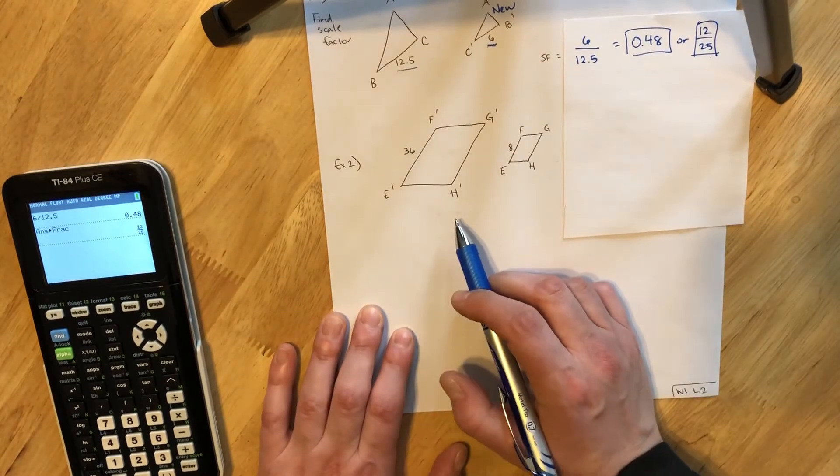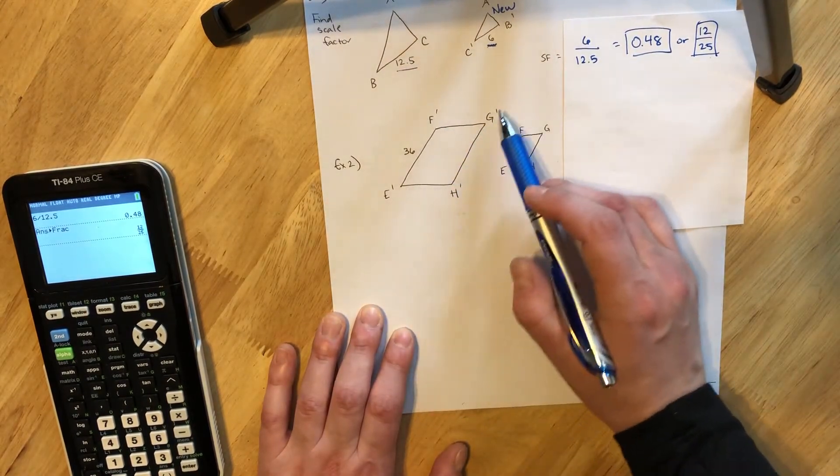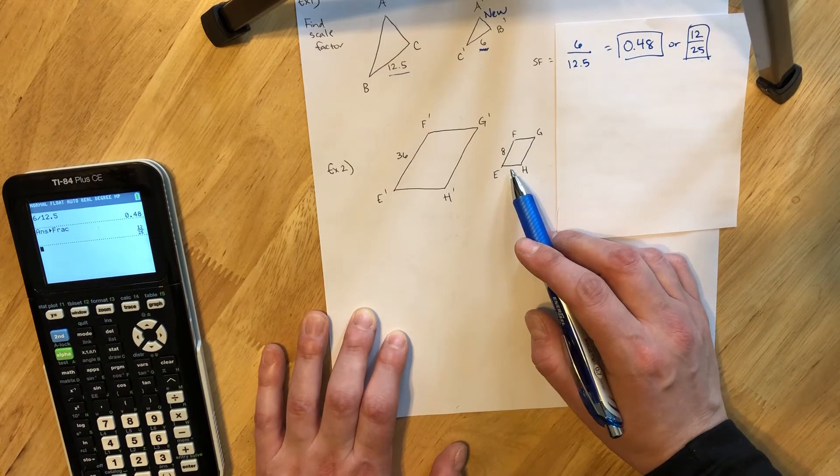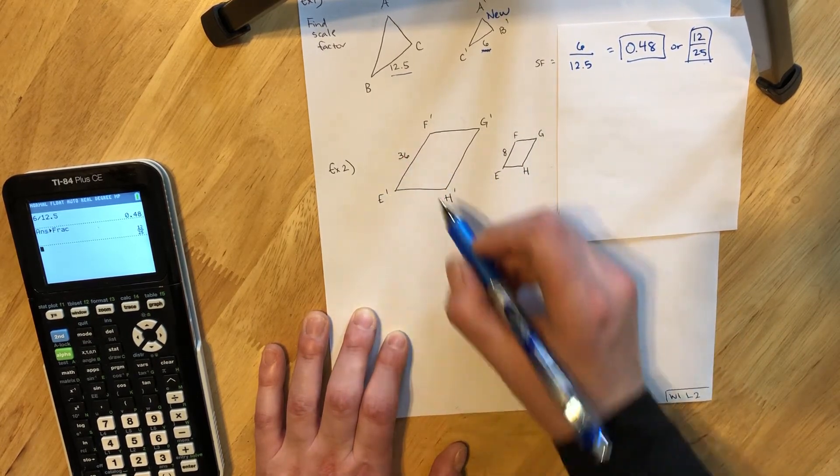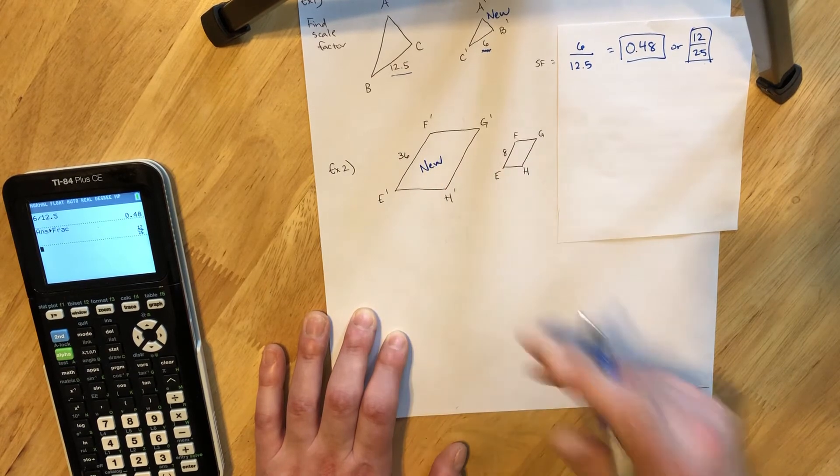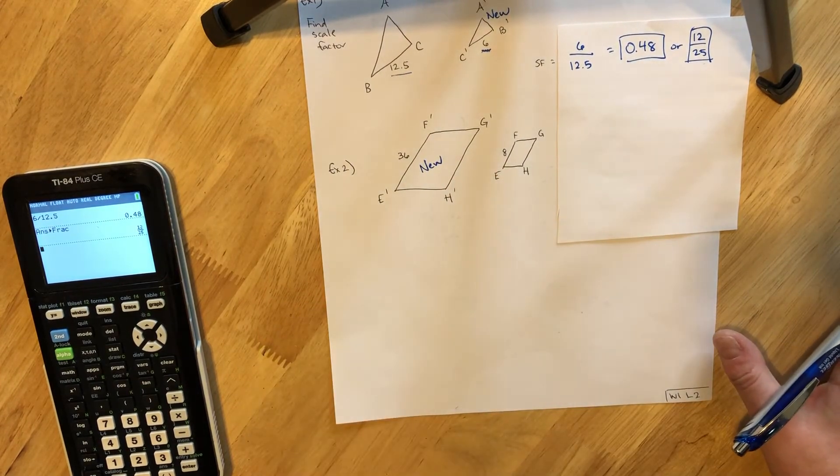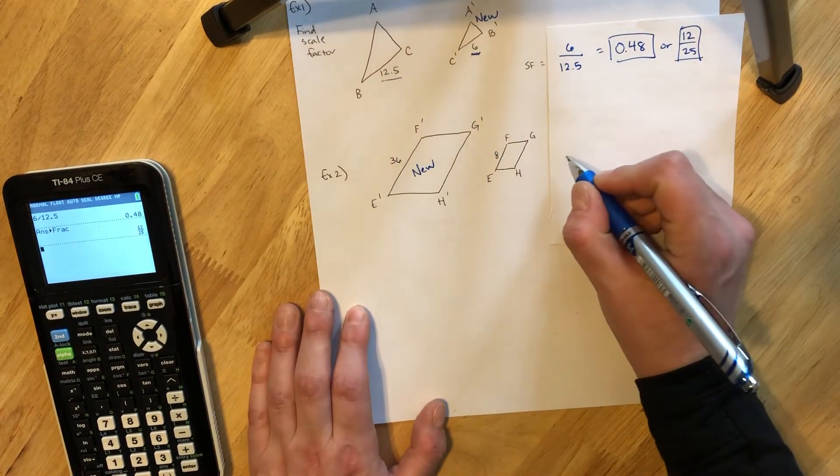Then here on example two we have E prime F prime G prime H prime and the other quadrilateral EFGH. So on the left here with all of those primes, this is our new shape. So it never hurts to identify that or mark that right off the bat.